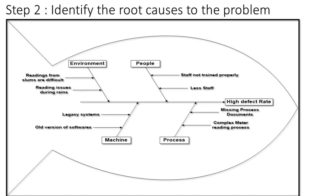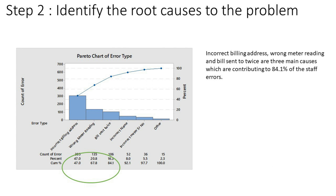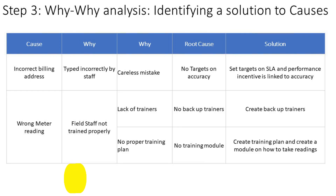The team then did a brainstorming session to identify root causes — this is the second step of the four-step Lean methodology. The head of the fishbone was high defect rate. Causes identified included missing process documents, complex meter reading process, staff not trained properly, less staff, legacy systems, old software versions, difficulty reading from slums, and reading issues during rain. Using a Pareto chart, they found that incorrect billing address, wrong meter reading, and bill sent twice were the top three errors contributing to 84 percent of the overall error types.